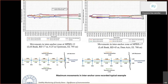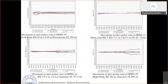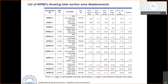At a typical MPBX installation, anchors are placed at 5-meter intervals from the deepest anchor at 25 meters. The maximum recorded movements read as differences in anchor zone displacements — toward or away from the excavation face — with maximums of 4.23 mm and 3.73 mm recorded, considered negligible at this stage.